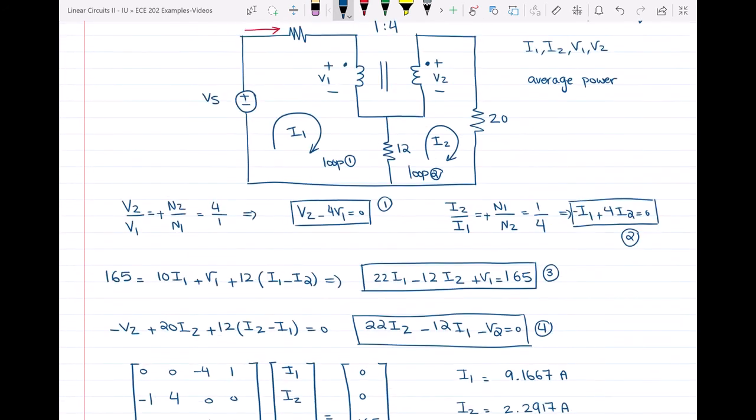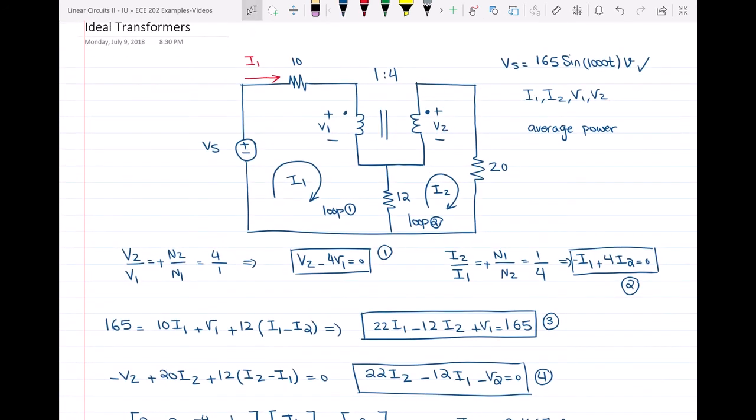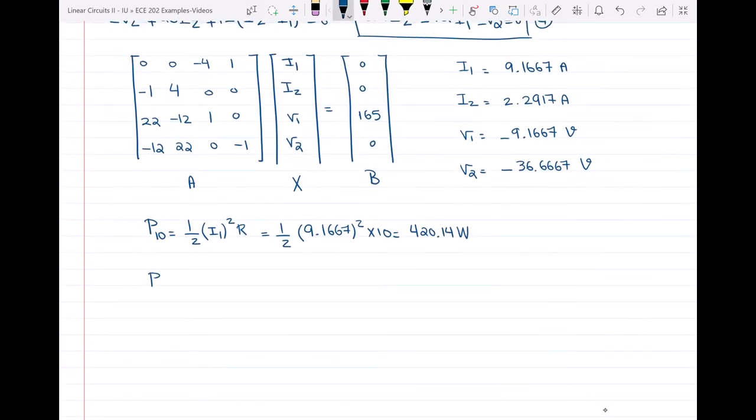Then the power through the 20Ω resistor. We can see the current passing through the 20Ω resistor is I2. P of 20 is going to be half I2 squared multiplied by R and that would be half times 2.2917 squared multiplied by 20 and that would give us 52.51 watts.